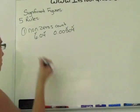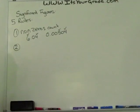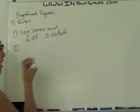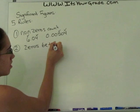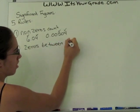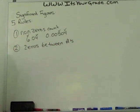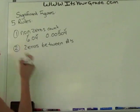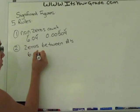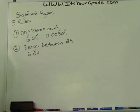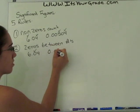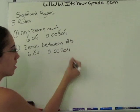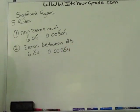The second rule is that the zeros between numbers are also significant. So in the previous example, 6.04, the zero is now significant. In the second example, 0.00504, the zero in the middle is also significant.